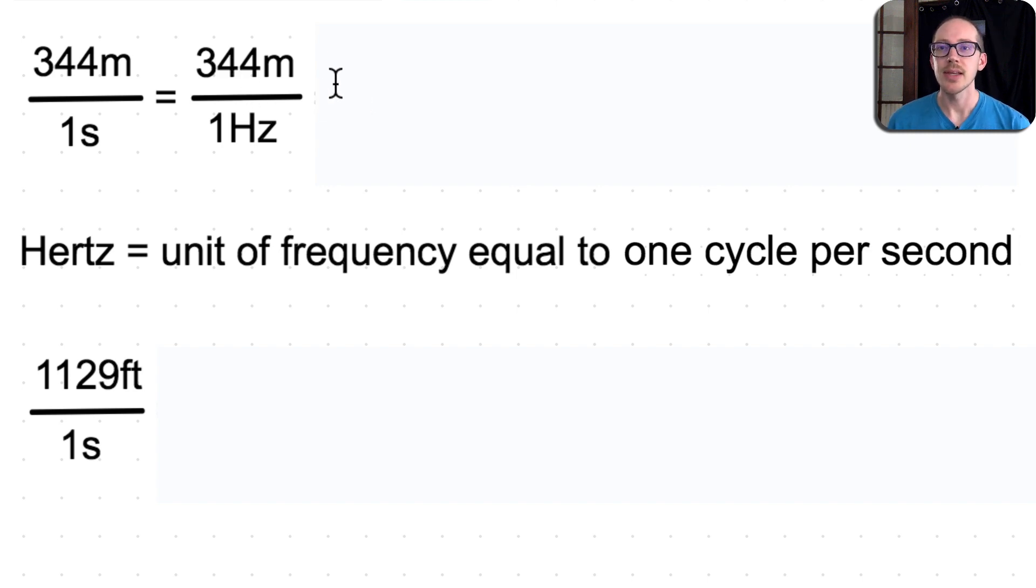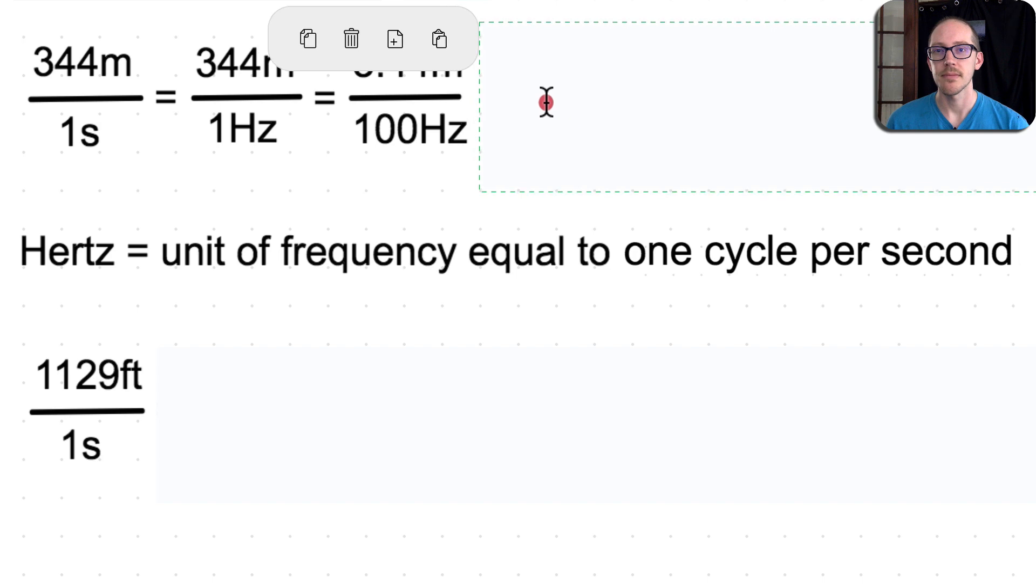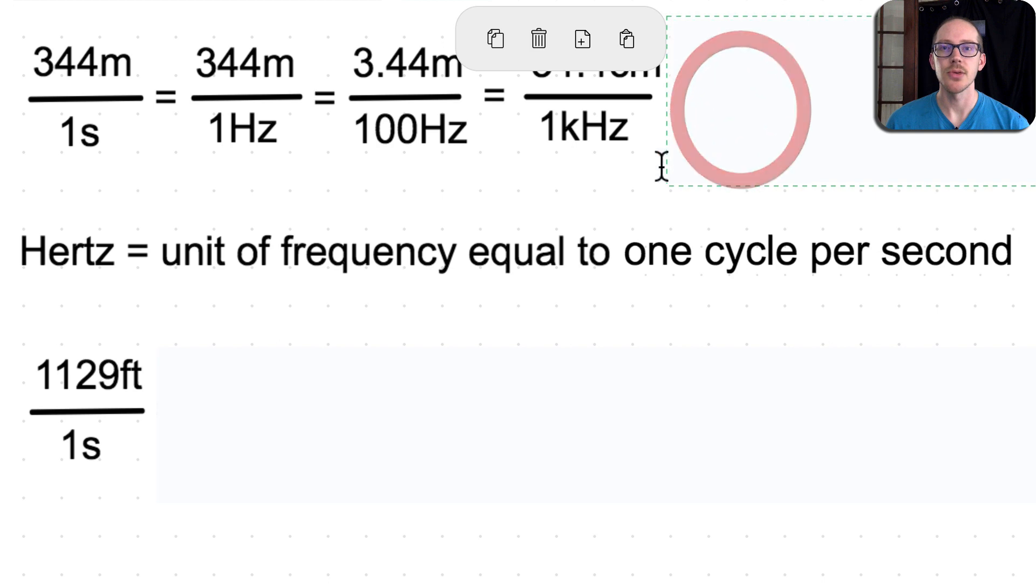From there, all we need to do is move the decimal place around. So if I go from one to a hundred, I'm adding two zeros behind this one, so then I just need to move the decimal place down two places. So instead of 344 meters, it's going to be 3.44 meters. So 100 Hertz has a wavelength of 3.44 meters, and if I add another zero that's three zeros, then I'll just move the decimal place down once more. So it'll be 0.344 meters, and we can convert that to centimeters. 34.4 centimeters is 1 kilohertz. If I add another zero, we just move the decimal place down again, so it'll be 3.44 centimeters is the wavelength of 10 kilohertz.